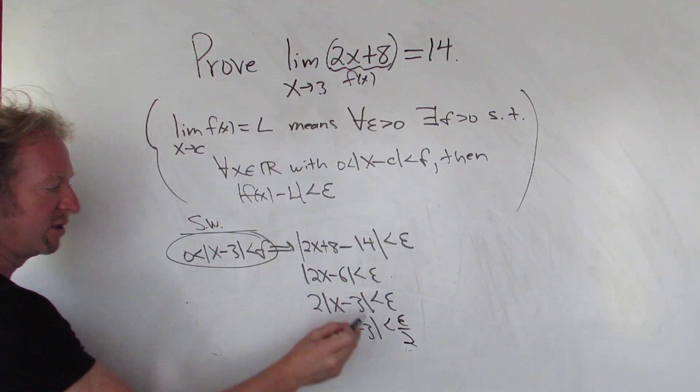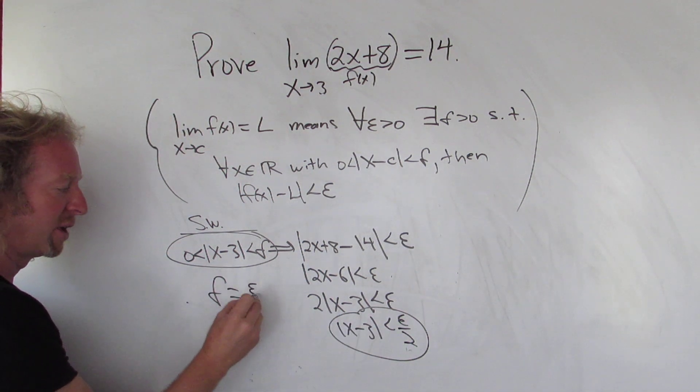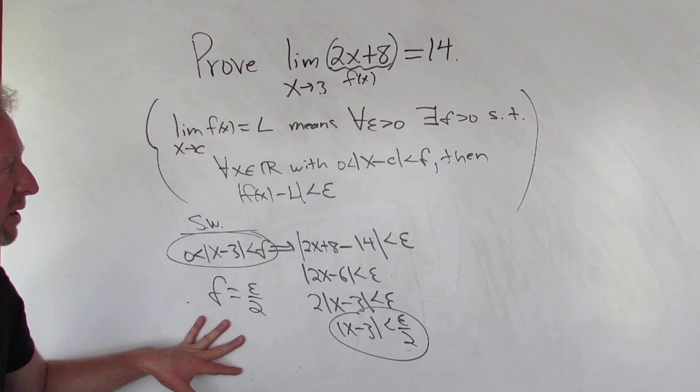So if this is true, then this is true, right? So delta must be equal to epsilon over 2, okay? So that's going to be our delta in the proof.